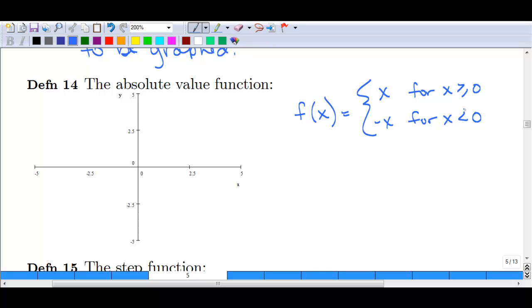So again, what's going on here is we have two different graphs and two different intervals. The first graph is the line y equals x, or f of x equals x, and this occurs on the right half of the graph.